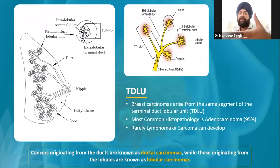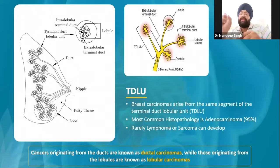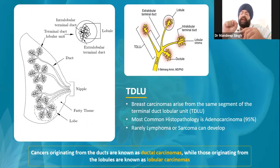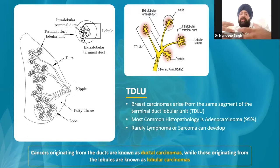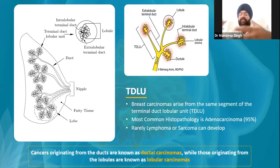By histopathological picture, I mean the description we get on a biopsy — whether it is invasive ductal cancer, invasive lobular cancer, ductal cancer in situ, or lobular cancer in situ. Sometimes we get very specific terms like medullary cancer or metaplastic cancer. This is what the histopathological picture is all about.